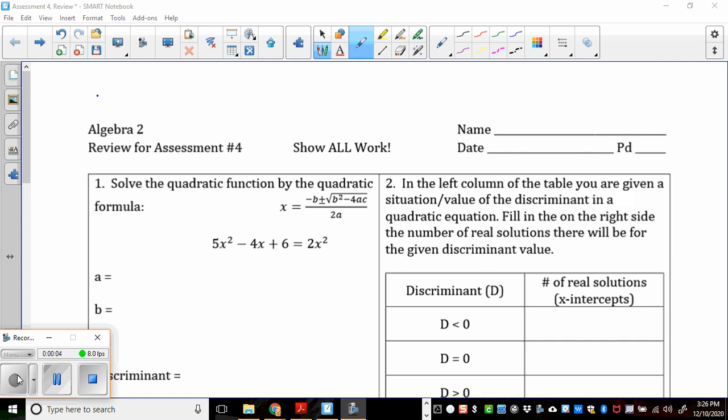Alright, so here we go with this review sheet here for assessment number 4 next week. The first question says to solve the quadratic equation by the quadratic formula. So there's a quadratic formula written there for you. To get it prepared, I had to take away 2x squared from both sides. So that puts me at 3x squared minus 4x plus 6 equals 0. So you can see my a, b, and c terms. My a is 3, my b is negative 4, and my c is 6.